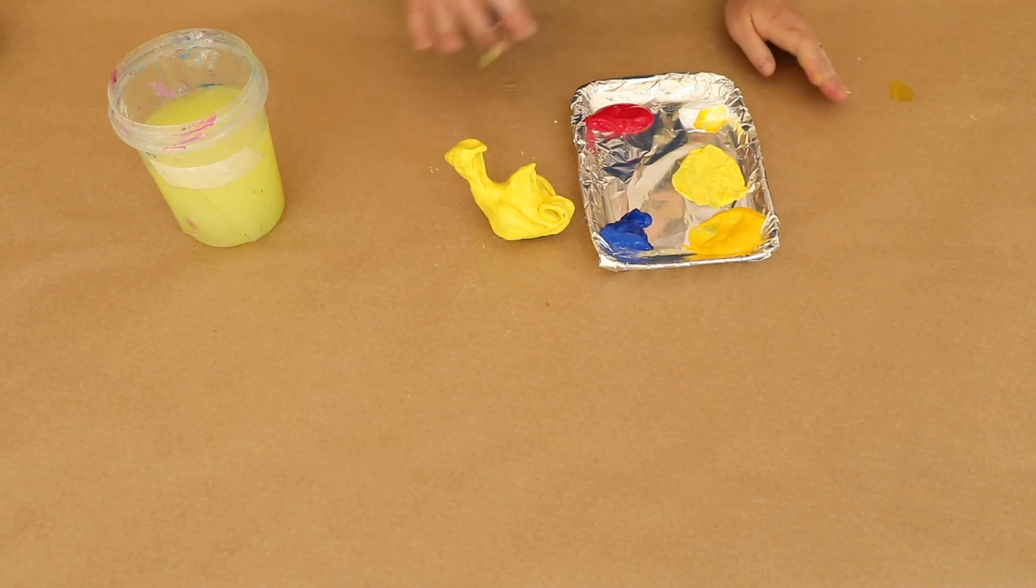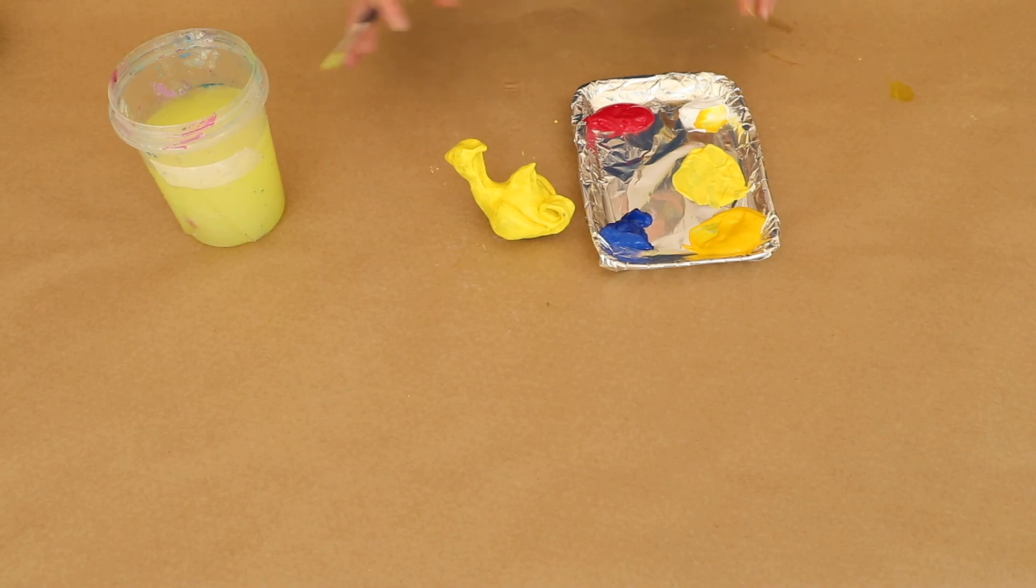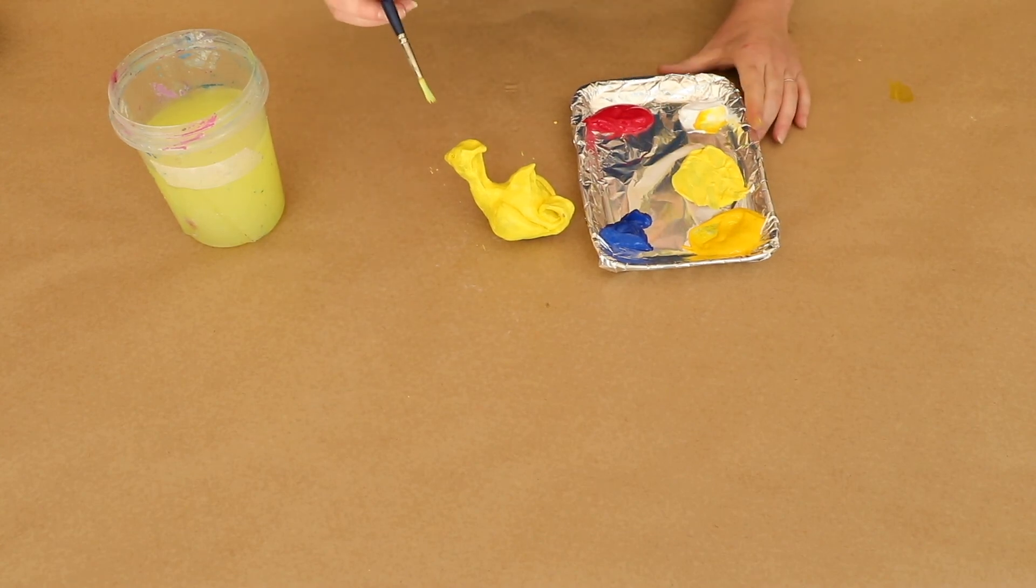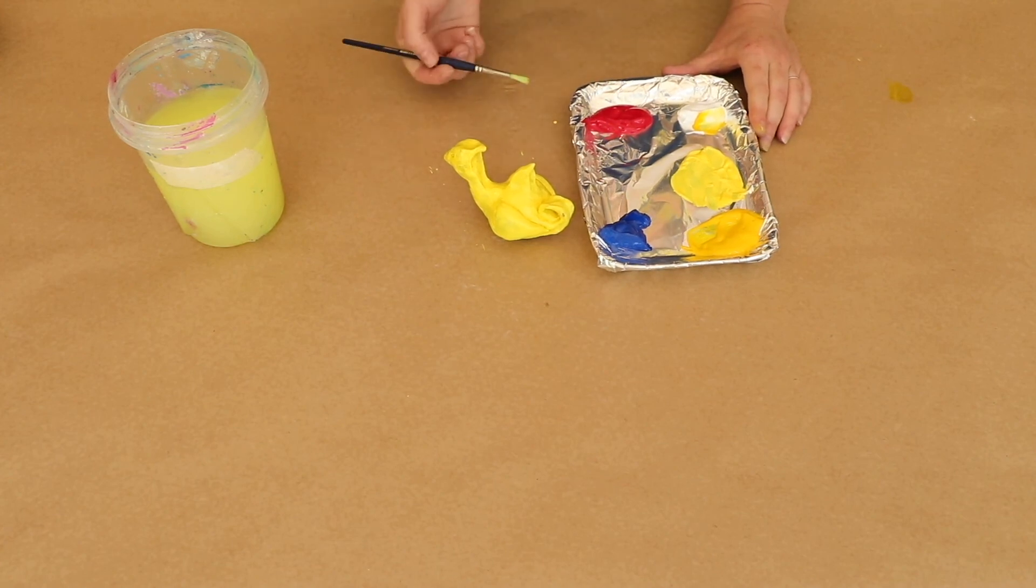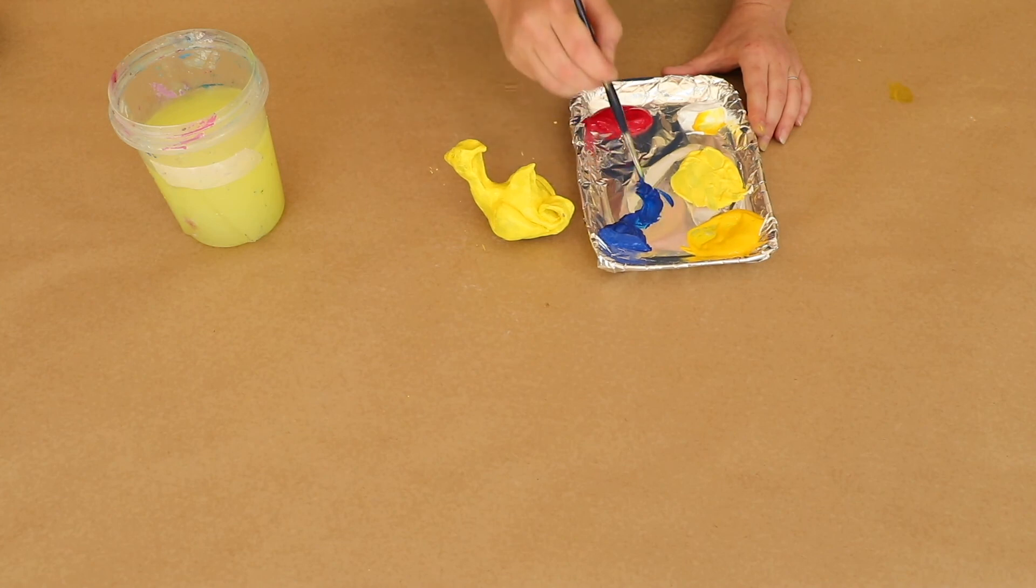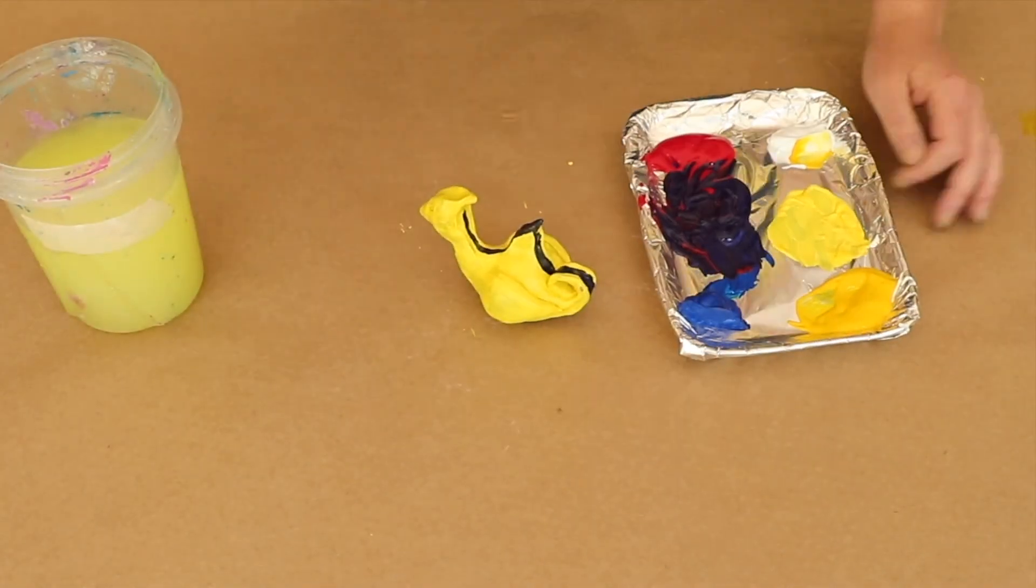Step eight. Once you have a base color down, then you can get creative. You can do spots, you can do stripes, you can do a valley color, anything you want. So you can mix your colors together or use the ones that we provided. I think I want to go for purple, so I'm going to take some of my blue, some of my red, and I'm going to mix those together, a nice dark purple. And I think I'm going to do some stripes on them.